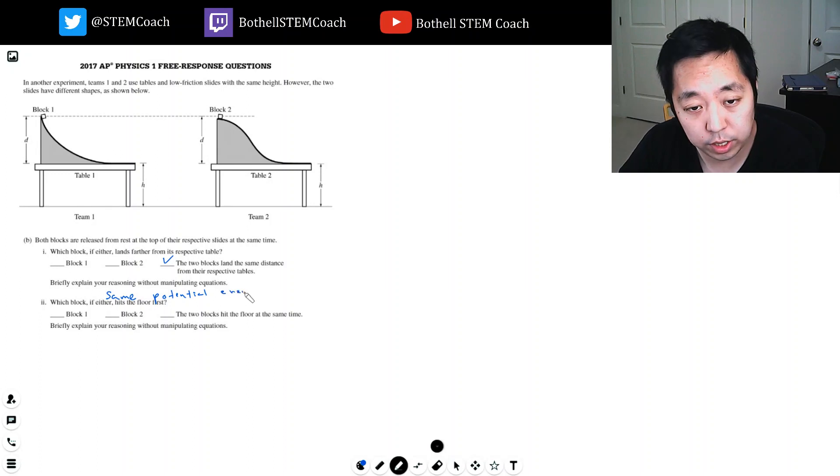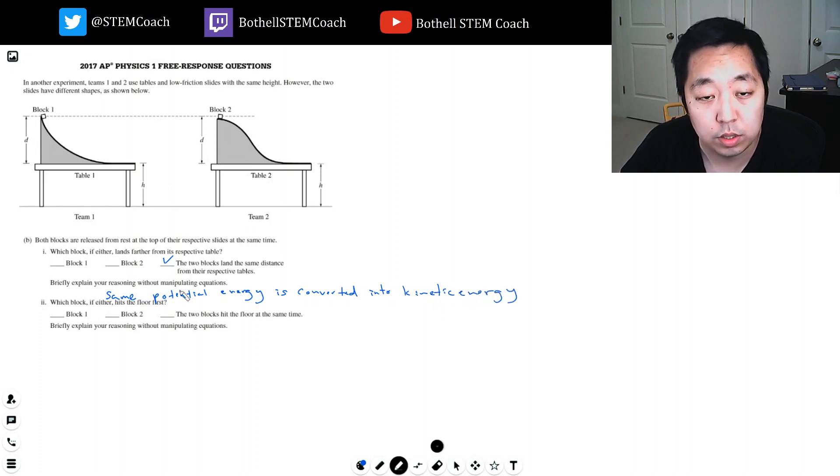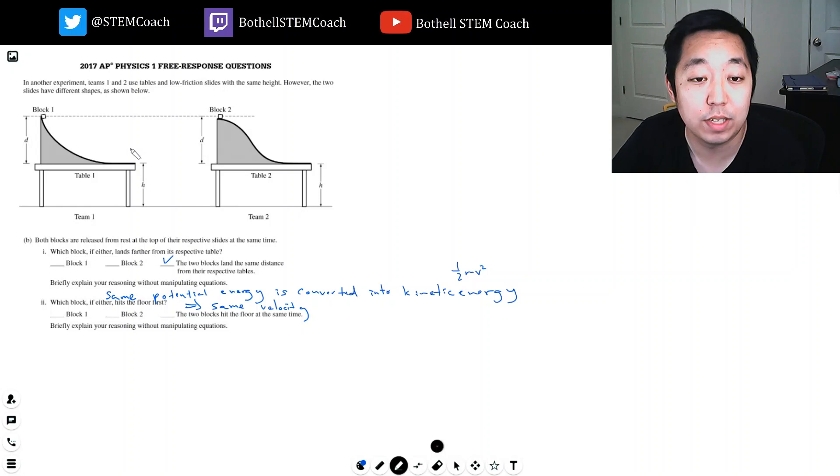The same potential energy is converted into kinetic energy, so it's the same amount of potential energy and that implies the same velocity. Right, because the kinetic energy is one-half m v squared. If it has the same kinetic energy, it has the same velocity. If it has the same velocity, then they'll both go the same distance because they're launched horizontally at the same height.